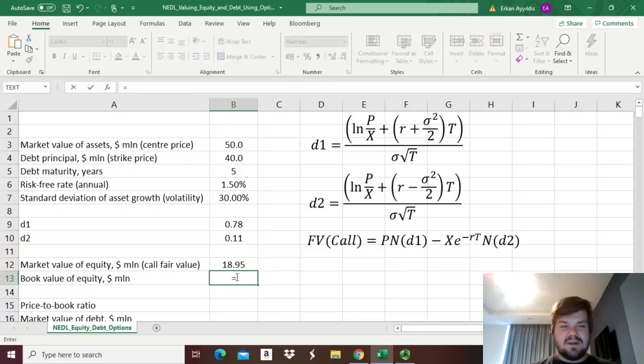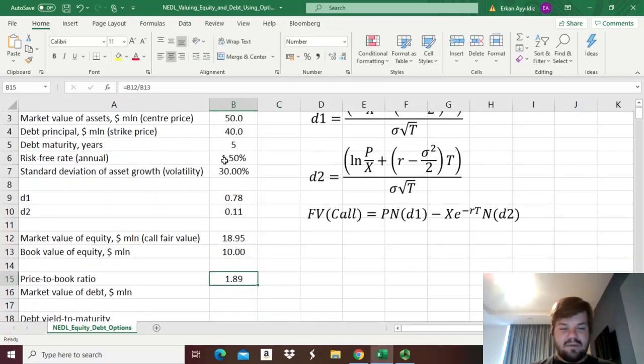If we compare it to book value of equity, which is assets minus liabilities, then we'll get 10. So, the price-to-book ratio is above 1, it's 1.89,